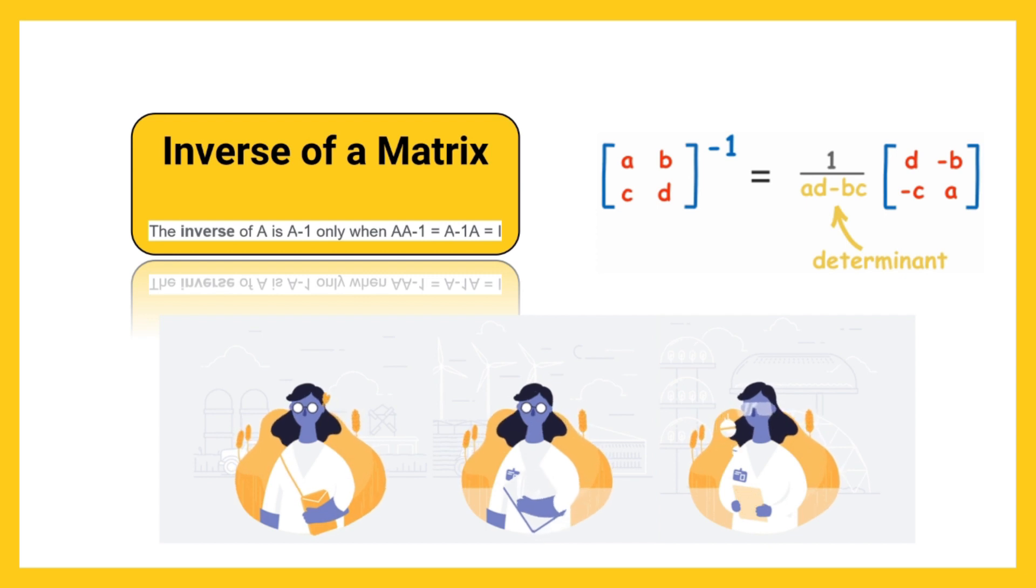Condition for a square matrix A to possess an inverse is that the matrix A is nonsingular, i.e., determinant A is not equal to 0.